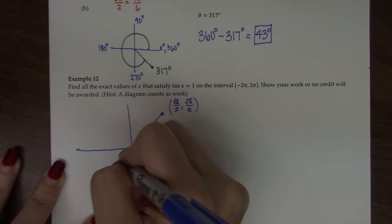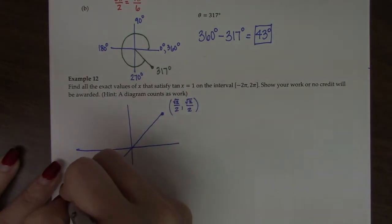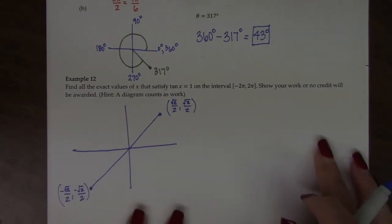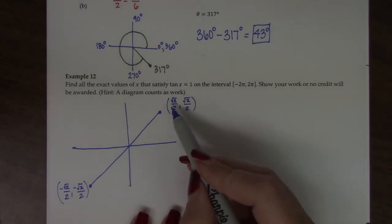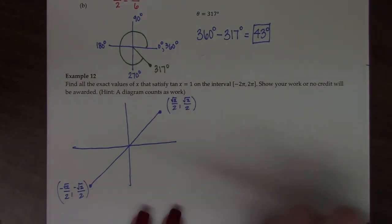And then in quadrant 3, they're also the same, because they're both negative square root of 2 over 2. So here, sine over cosine is 1, and sine over cosine is 1.